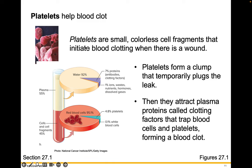Platelets help your blood clot. Platelets are small, colorless fragments that initiate blood clotting when there's a wound. Blood clots are really important — that's how your body forms a scab so that you don't keep bleeding. They temporarily plug a leak, then attract plasma proteins called clotting factors that trap blood cells and platelets, forming a blood clot.